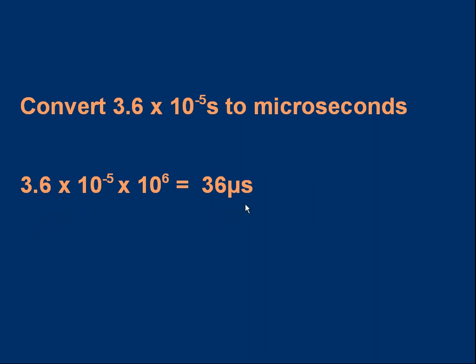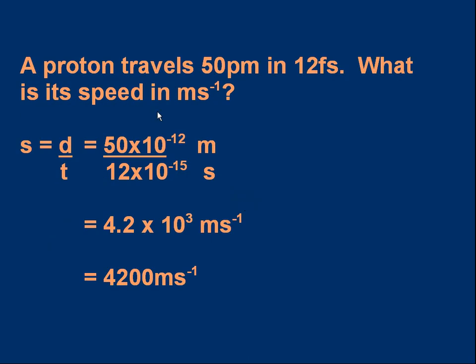Let's do a proper calculation. A proton travels 50 picometers in 12 femtoseconds. What's its speed in ms⁻¹? Well, speed is distance over time. If we want the speed in meters per second, the distance must be in meters, the time must be in seconds. So we put the distance in meters. We don't write 50 pm. We write 50 × 10⁻¹² m, because pico is 10⁻¹².